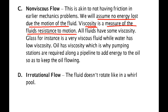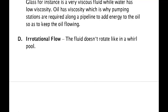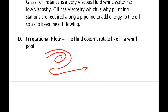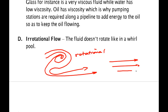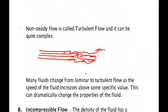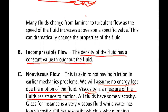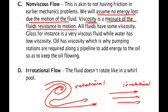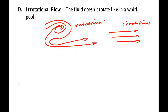The fourth property is that the flow cannot be rotating — we're not going to deal with whirlpools or large amounts of circulatory motion in the fluid, such as fluid circling back on itself or forming a sink. This would be rotational flow, so we're going to make ours irrotational. Those are the four properties of an ideal fluid: steady flow, incompressible flow, non-viscous flow, and irrotational flow. If it has those four properties, it is an ideal fluid.